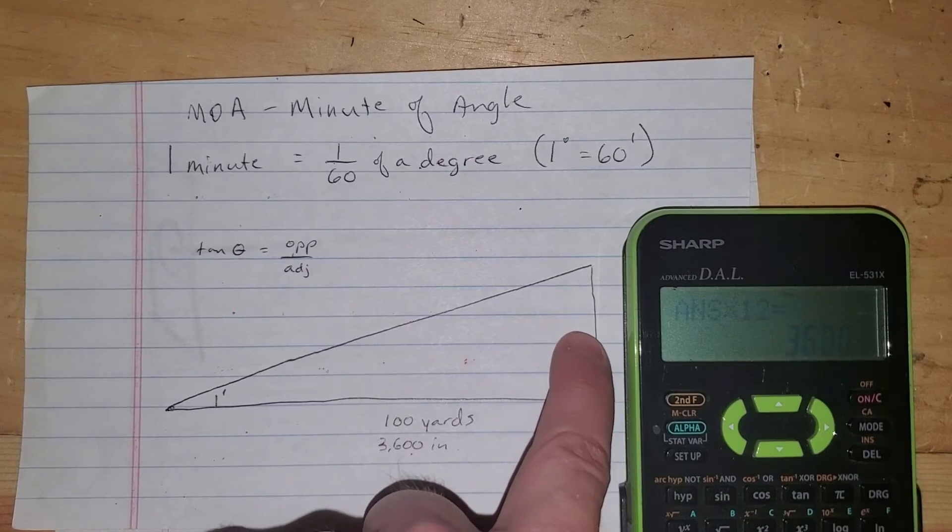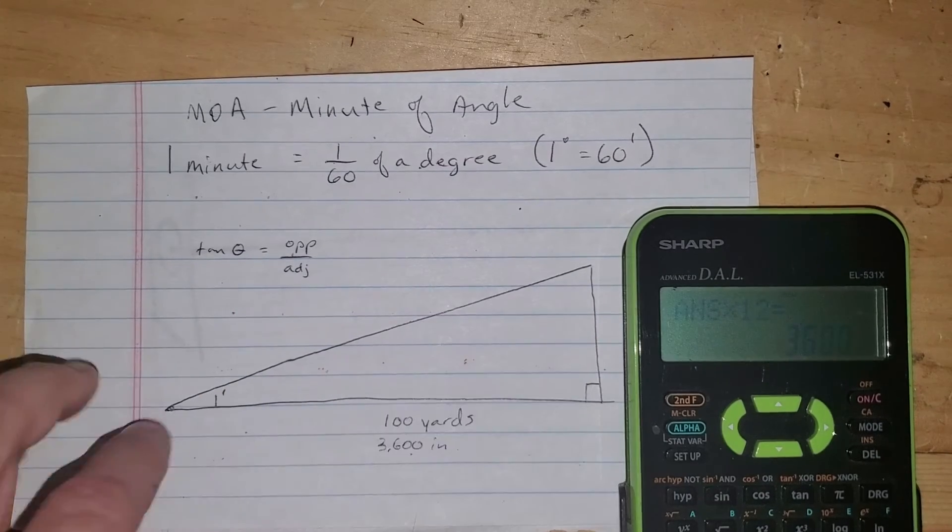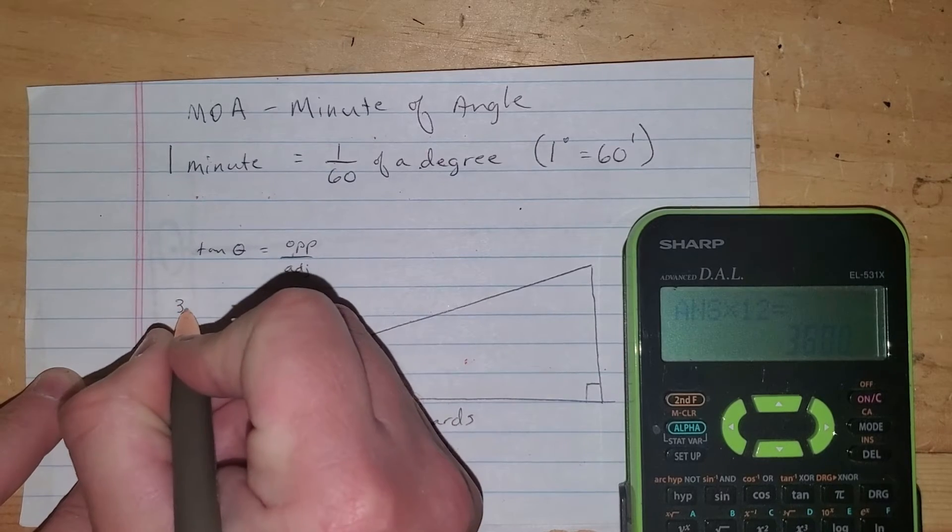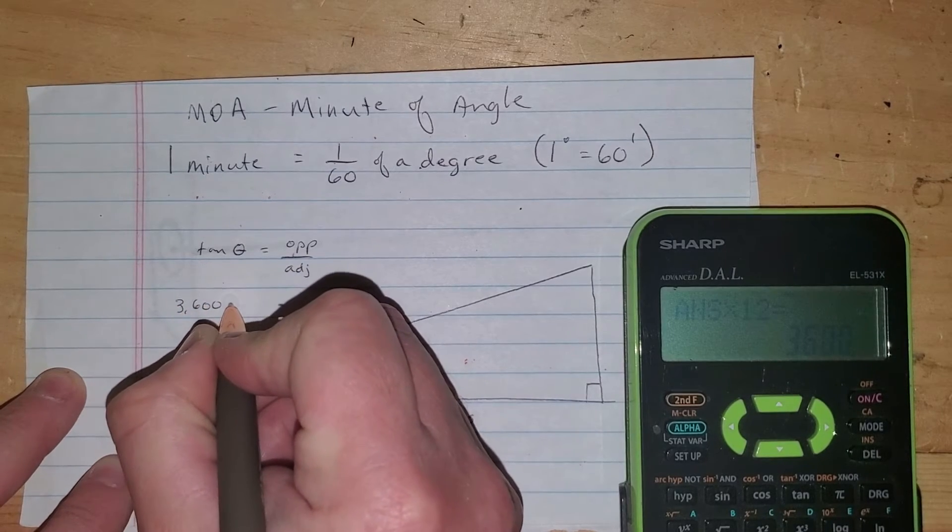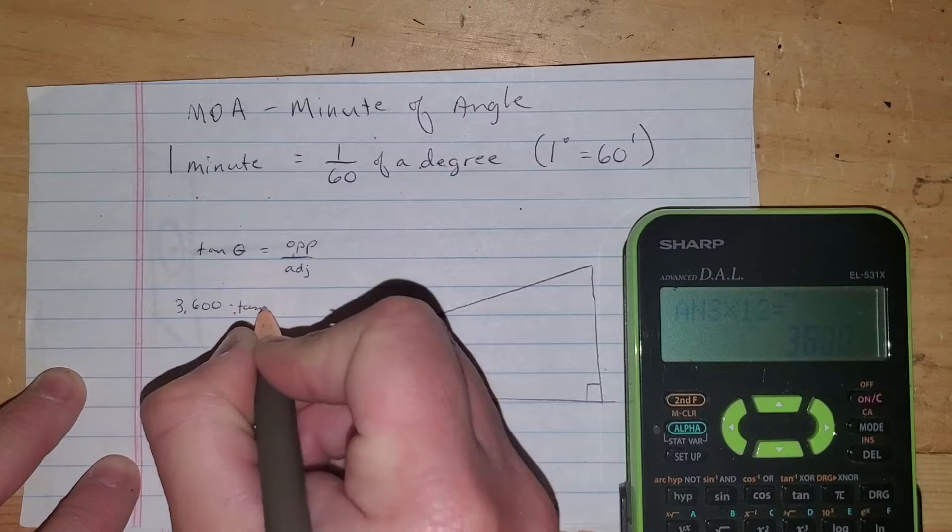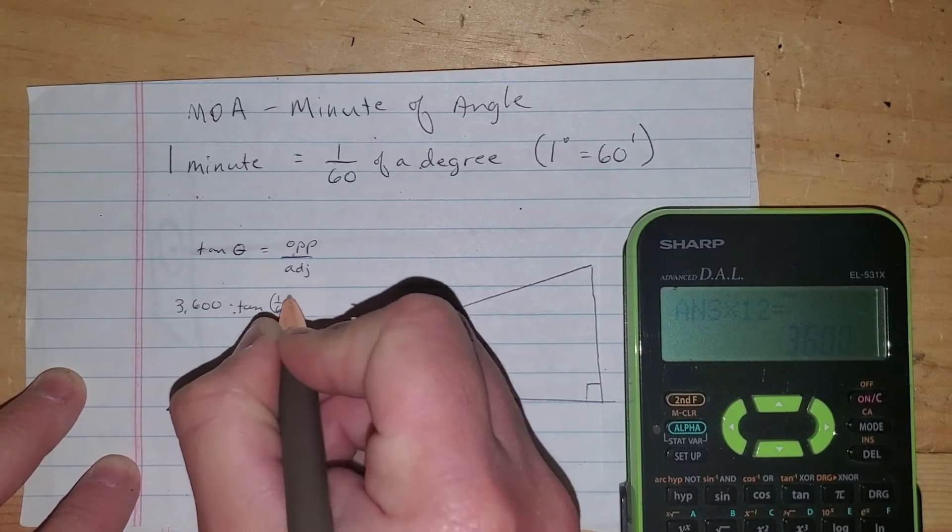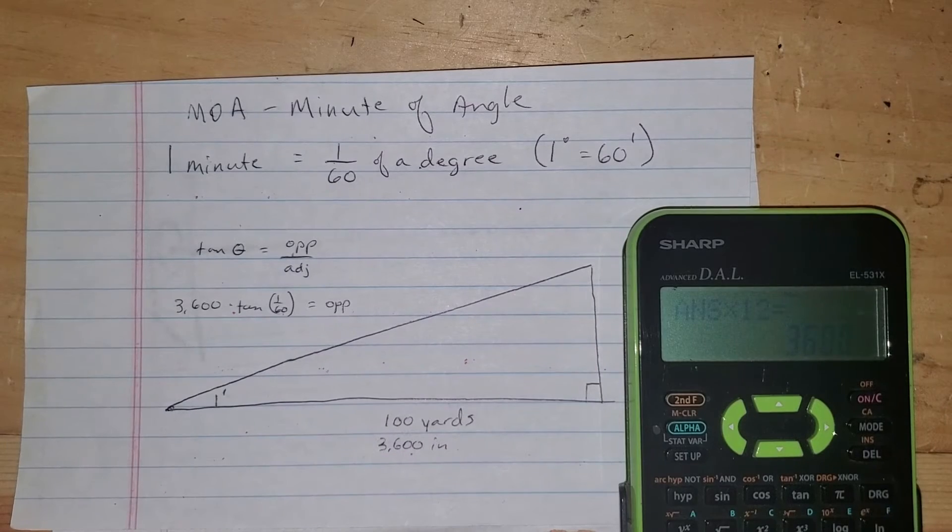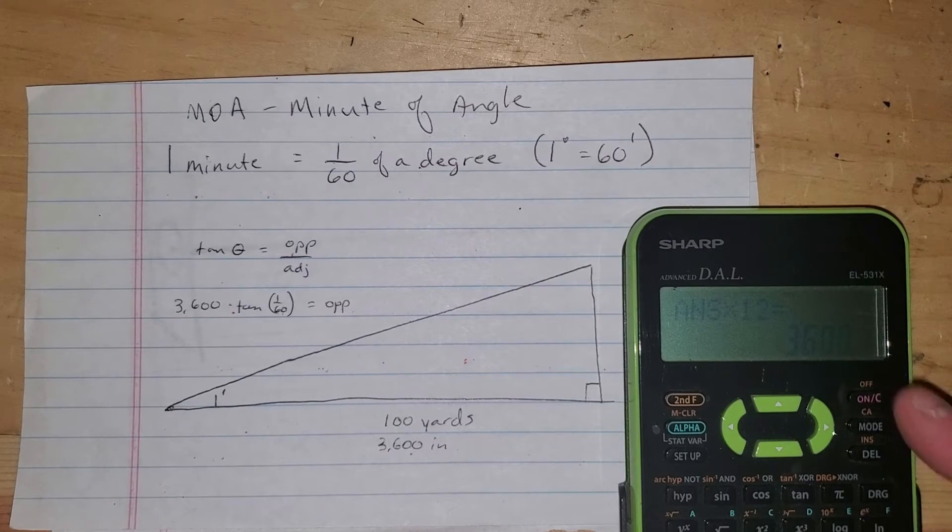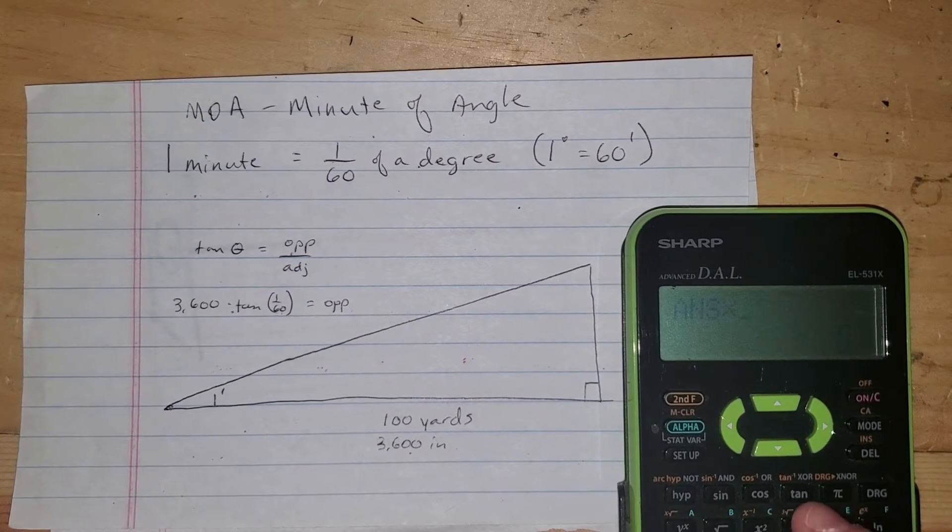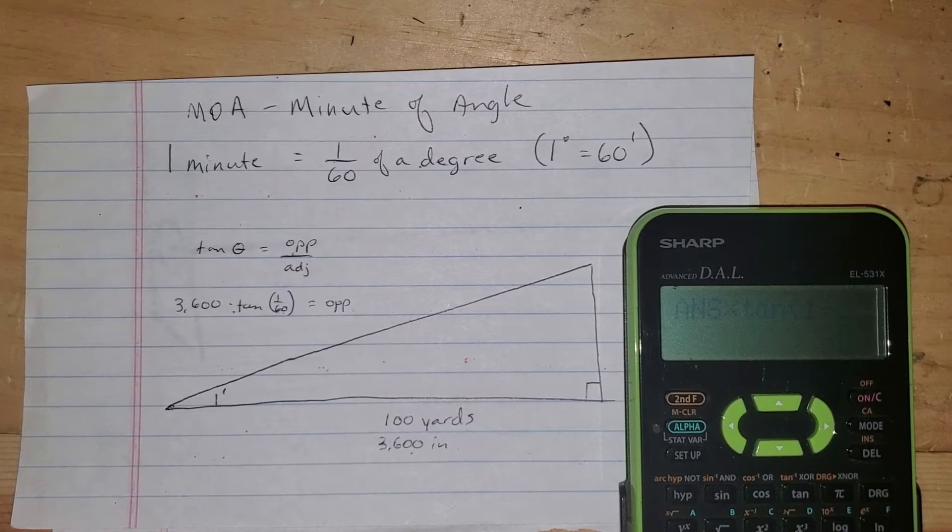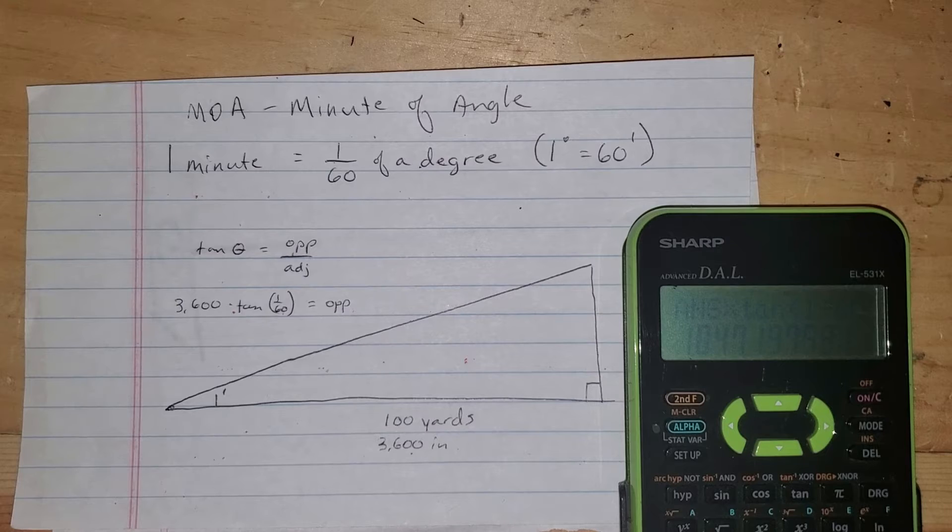Now, I want to solve for this side right here. So if I do that, what I end up with is I get 3,600 inches times the tangent of one-sixtieth of a degree is equal to this opposite side. So I'm going to take that 3,600 times the tangent of one-sixtieth and hit enter.